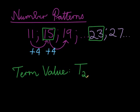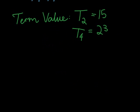This value is 23. We represent this by saying the second term value is 15, or the fourth term value is 23. So term value is literally the value we find at a certain position.